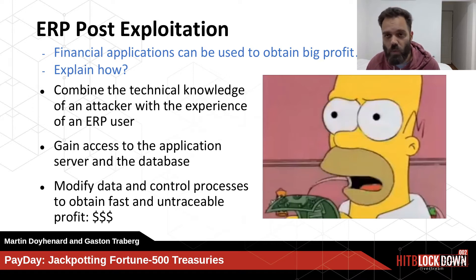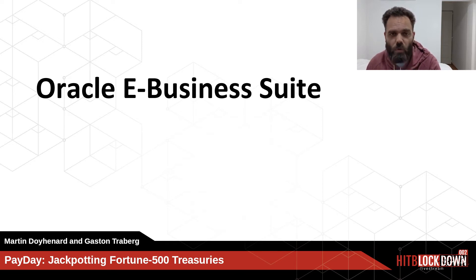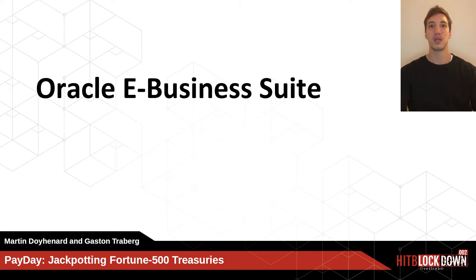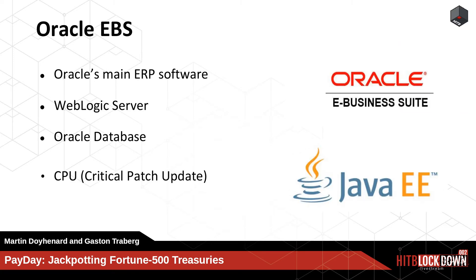Martin will now give more details about Oracle EBS. Oracle eBusiness Suite is Oracle's main ERP software. It's entirely written in Java Enterprise Edition using Java Server Pages, servlets, and applets. It runs on a WebLogic server and uses an Oracle database for storage. To fix vulnerabilities, Oracle releases a Critical Patch Update every three months. We chose EBS because it's one of the most widely used ERPs in the world and contains all the financial modules we'll use in our post-exploitation.